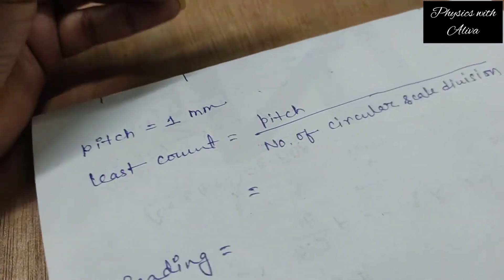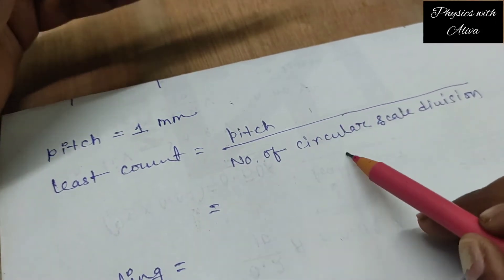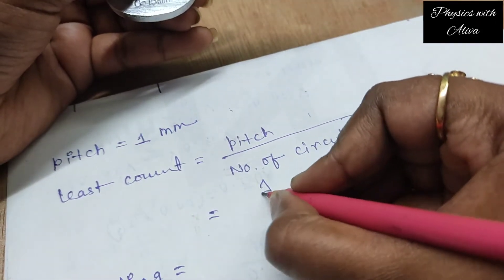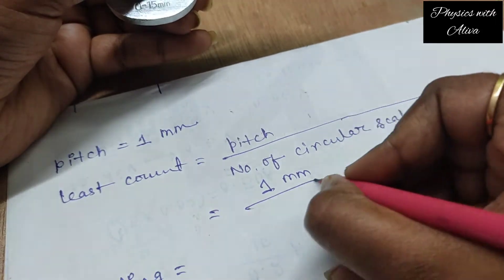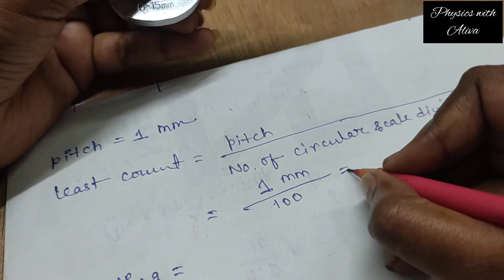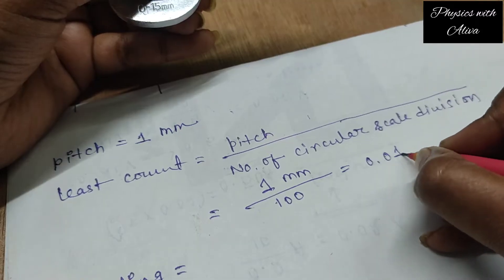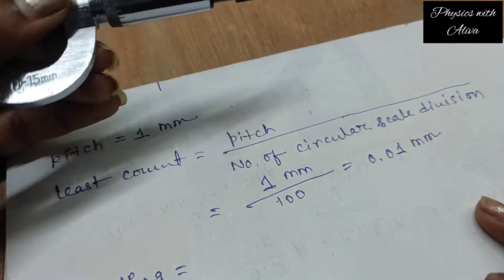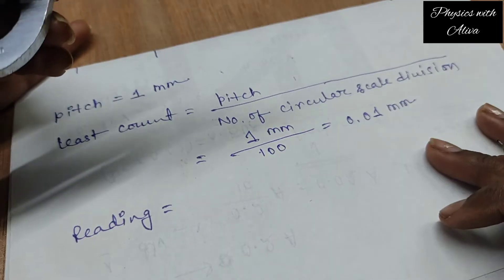The formula for the least count is: pitch divided by number of circular scale divisions. Here, pitch equals 1 millimeter and the number of circular scale divisions is 100. So the least count will be 0.01 millimeter.